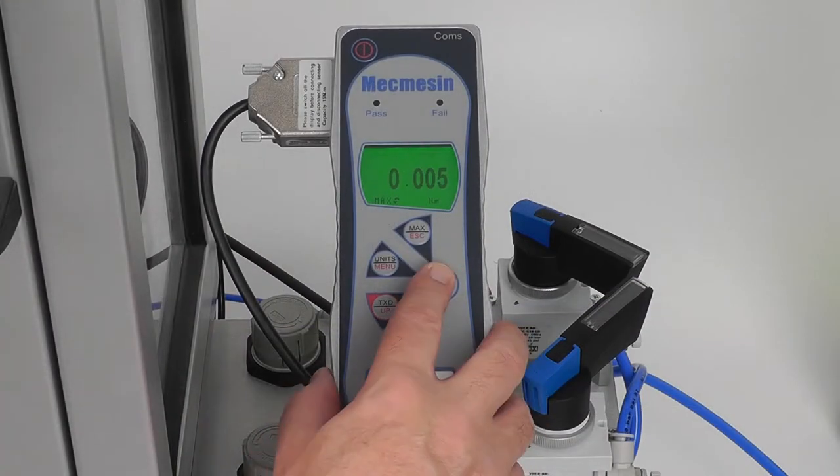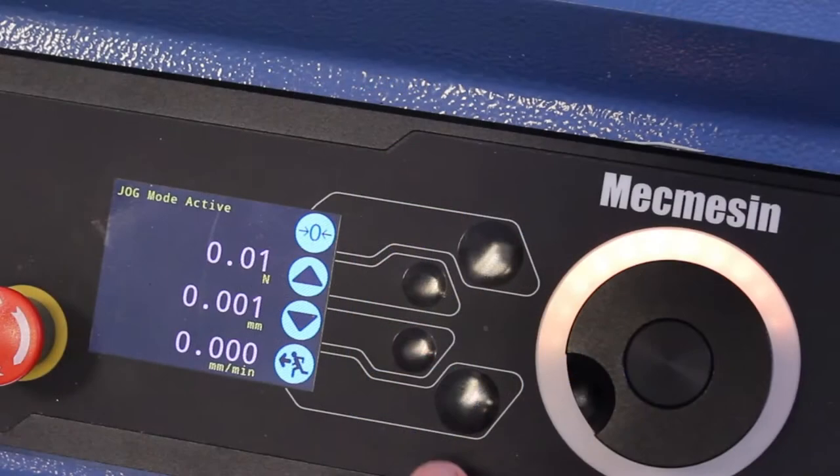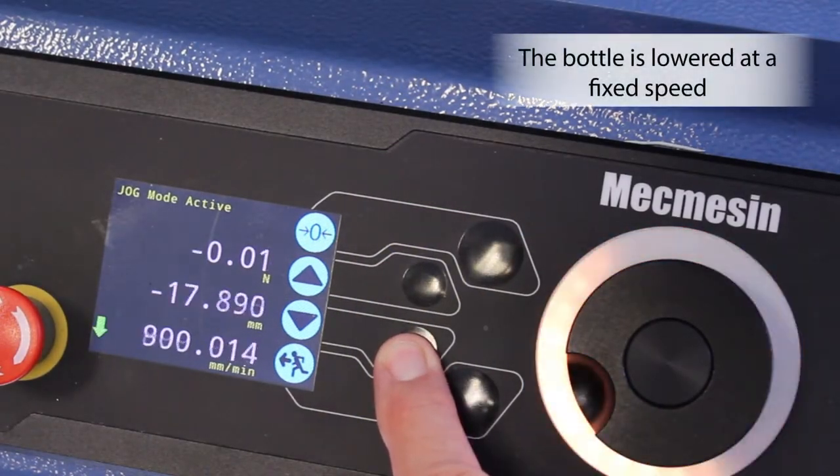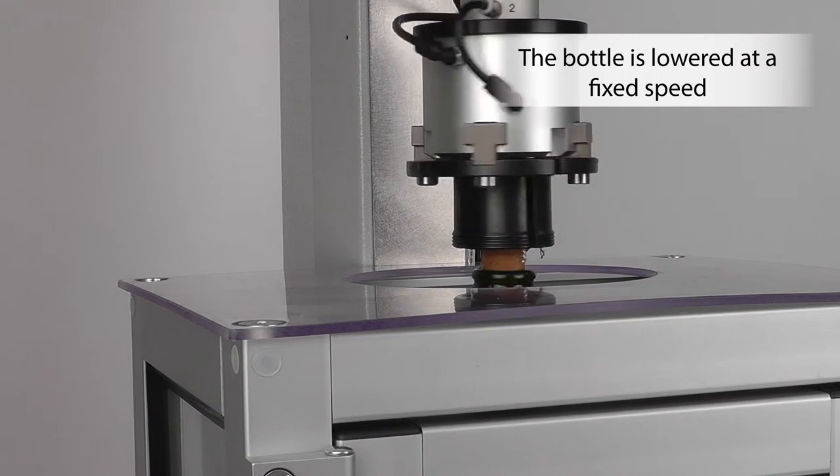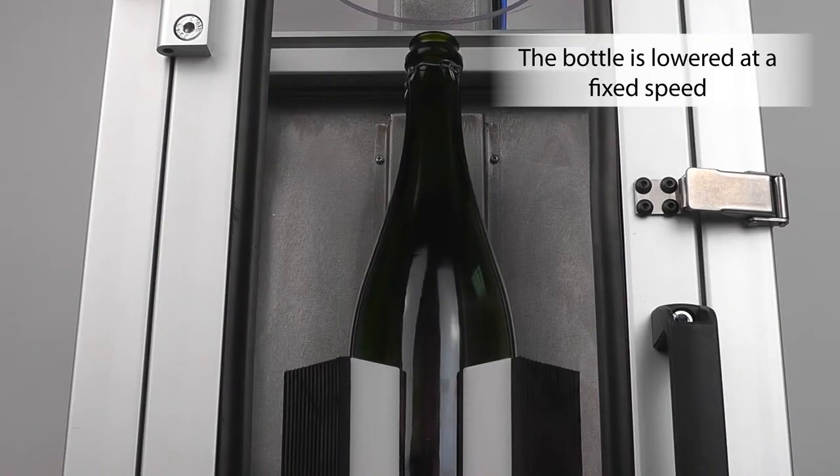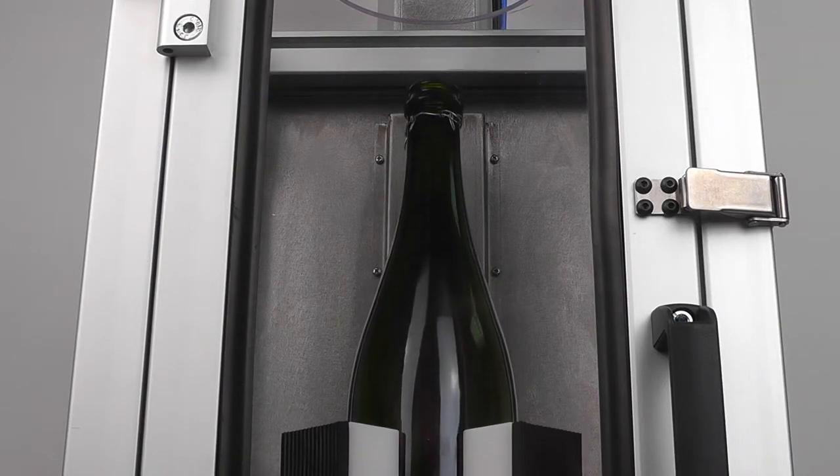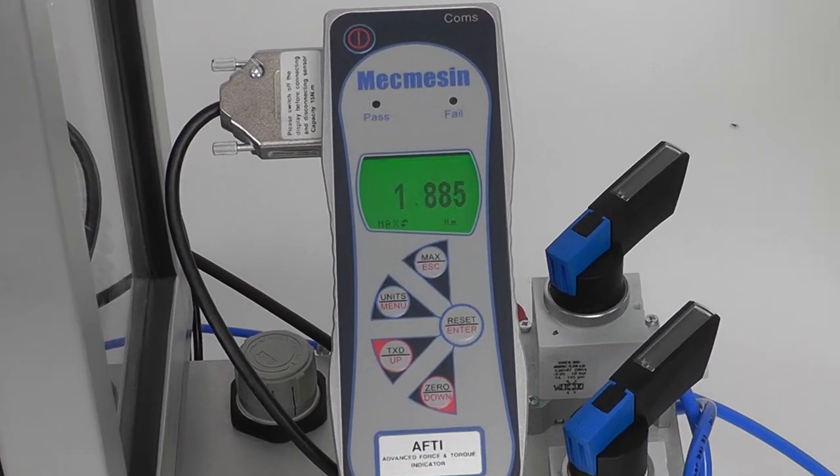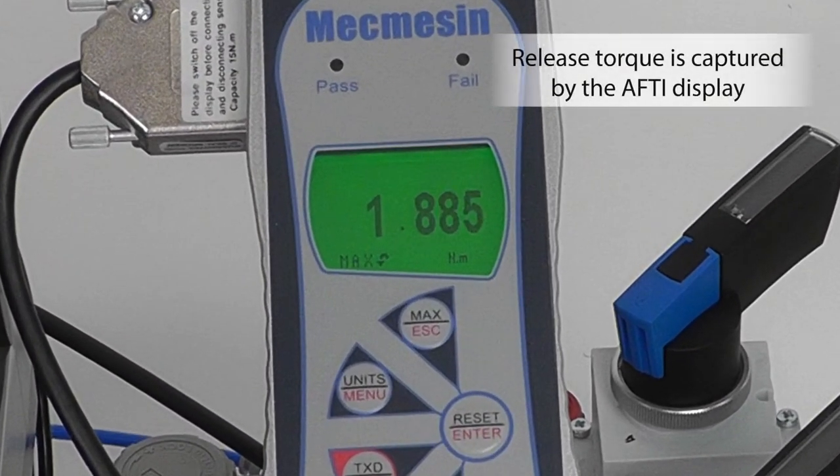The torque indicator is zeroed and the test started. The peak torque to remove the cork from the bottle is now captured on the display.